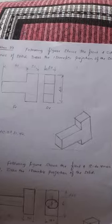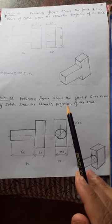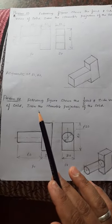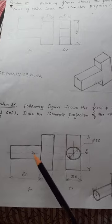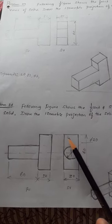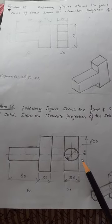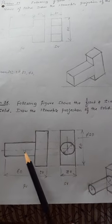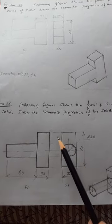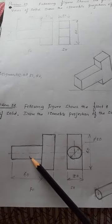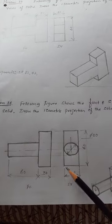Now similarly go for the next problem — problem number 28. The following figure shows the front and side views of a solid. Draw the isometric projection of the solid. In the front view it is also a T-shape. When you view the side view, this solid looks as a rectangular shape, but this portion is not a rectangle — it is a circular shape, meaning it is a round rod. That is why the axis line is shown here. This is a round rod with another rectangular block on it. The block diameter is 30 mm, this dimension is 60, this is 30, and the height is 60 mm. The width of this block is 30 mm.